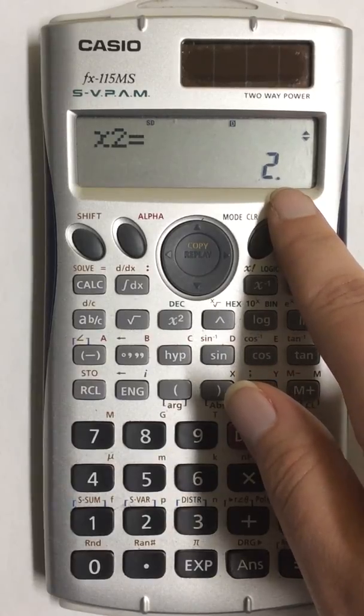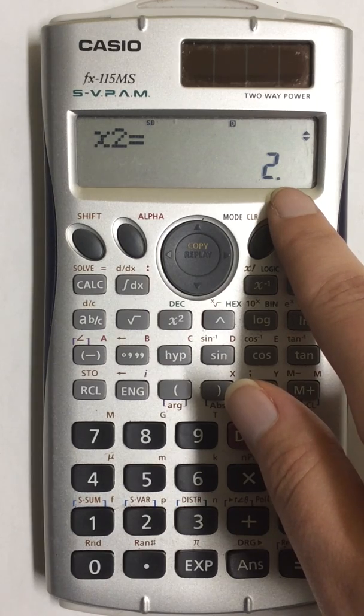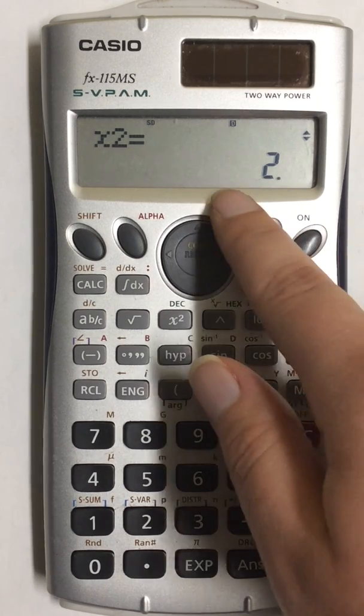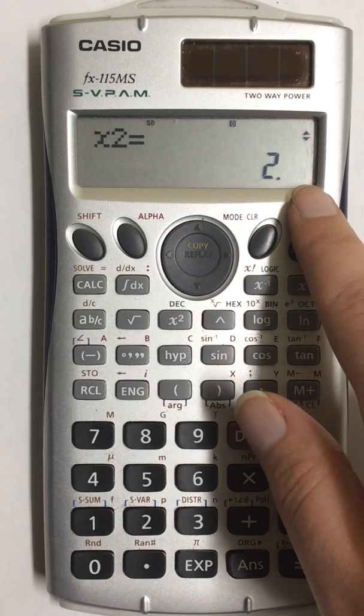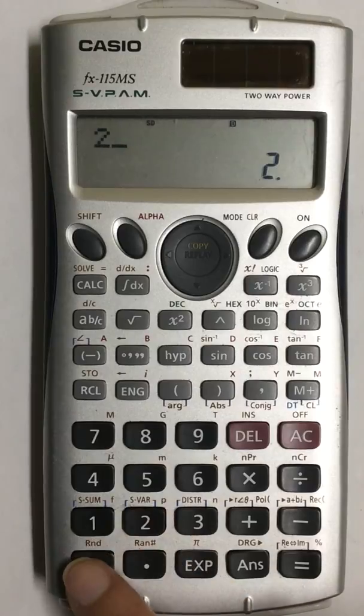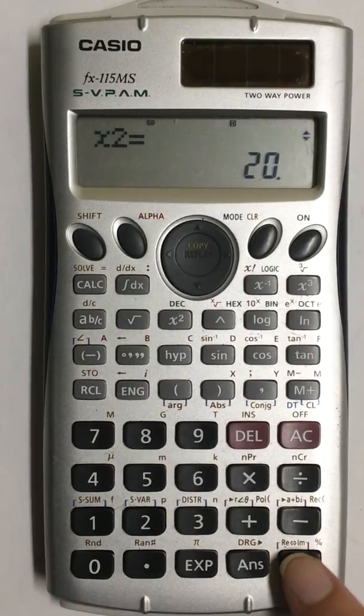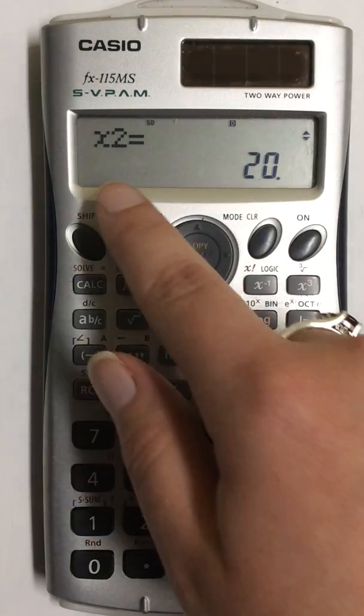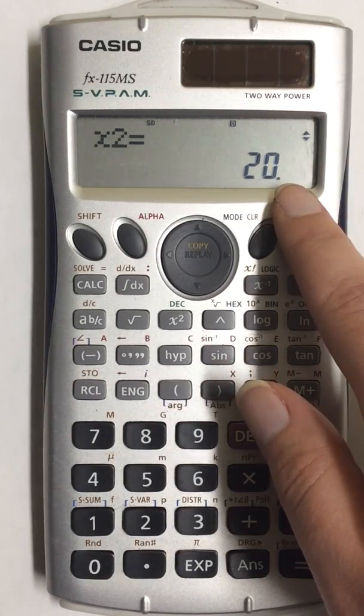The way to change it without deleting the whole list and entering it in again would be to make sure that the number is on your screen, and then type in the correct number. So I'm going to type in 20, and then hit equals. That will overwrite the number in that spot and change it to the correct value.